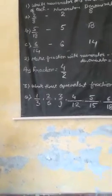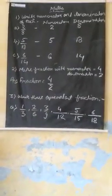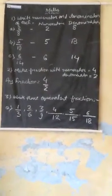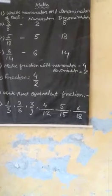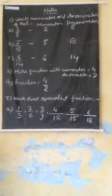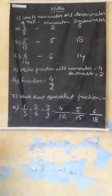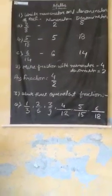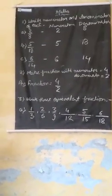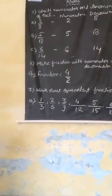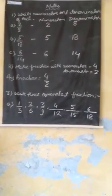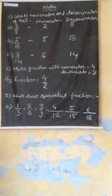Question number B: 5 upon 18. Here 5 is numerator and 18 is our denominator. Question number C: 6 upon 14. Here the upper part is 6, so it is numerator, and the lower part is 14, so it is our denominator.